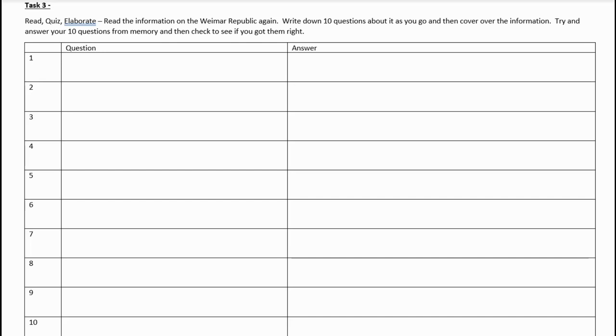If you have a friend who is doing history, maybe you could arrange to do the lesson at the same time and you could text each other 10 questions and test each other. But if you're doing this on your own, read the information, write the 10 questions down. Don't write the answers down. Then go back to it and see if you can answer the questions without looking at the information. You can check your answers later by looking back at the information. Pause this and have a go at that.